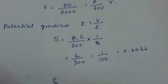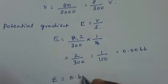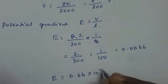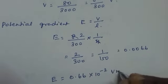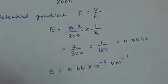The potential gradient is nothing but the electric field. That is 0.66 into 10 raised to minus 2 volt per meter.